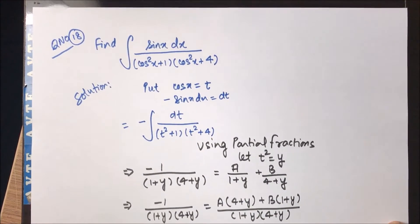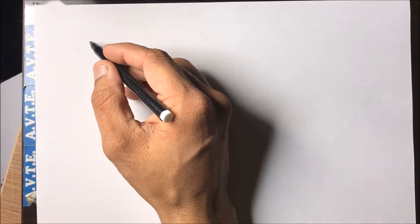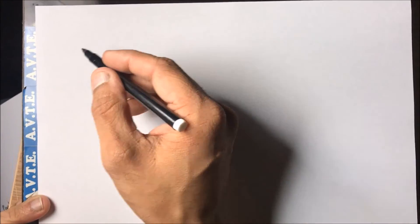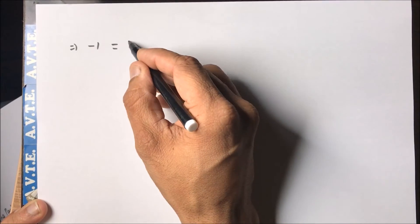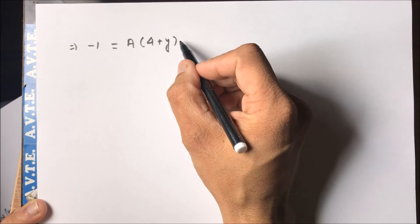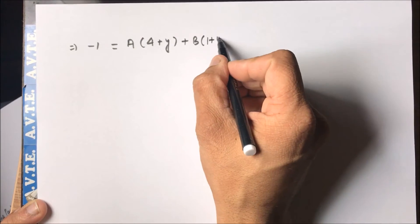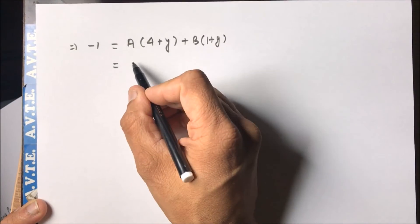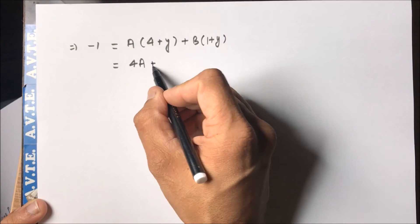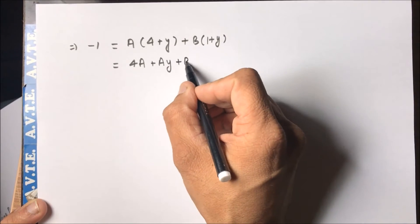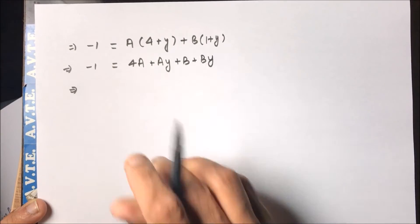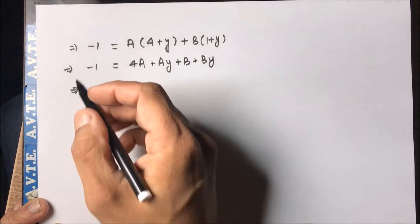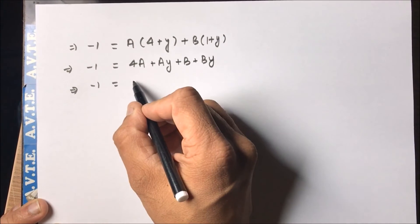And compare both the sides. So we have, now we will compare both the sides. I'm now opening the bracket. You can directly club them. There is no hard and fast rule that you need to open them and then, so you can club them directly.